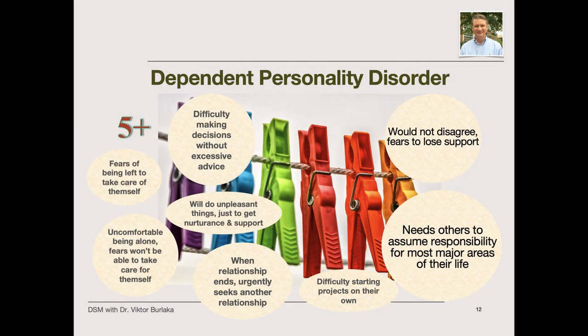People with dependent personality disorder cling to others and practice submissive behavior out of fear of separation. Fear of disapproval makes it difficult to say no to others, and in order to gain support they will take remarkable steps, such as accepting unpleasant tasks. Low self-confidence stops them from initiating and carrying out projects independently, and they often want others to take responsibility for major life areas. They seek lots of advice and reassurance just to make everyday decisions. Excessive, unrealistic fears of abandonment and the sense that they cannot care for themselves make them feel helpless or uncomfortable when alone, and they may desperately seek a replacement for any close personal relationship that has ended.